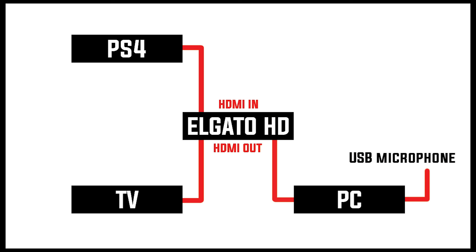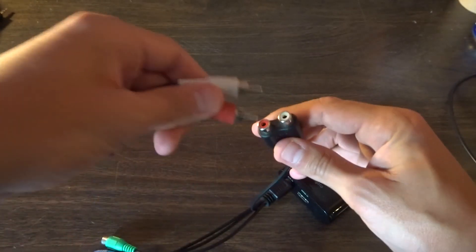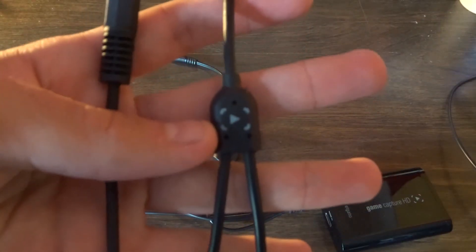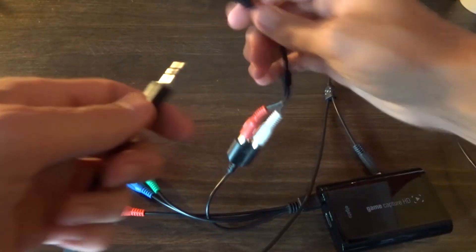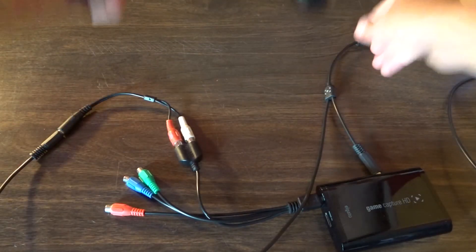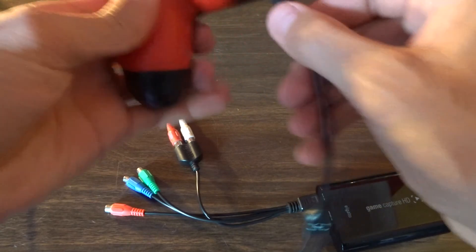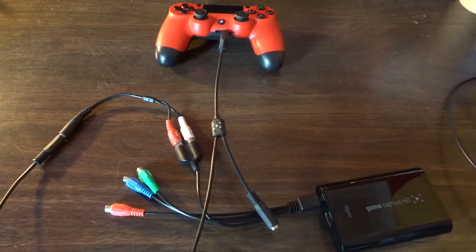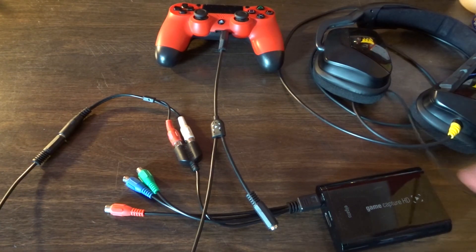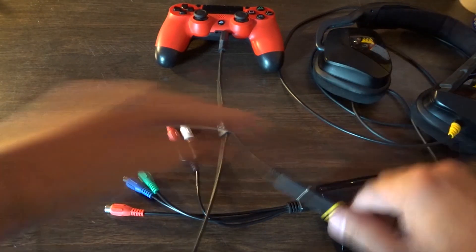The next part might get a little complicated, so that's why I am going to show you a video recording of me connecting all of the pieces together. Now because we are using the Elgato HD, we have to use the component breakout cable. We plug this cable into the AV in port that's located on the HDMI inside of the Elgato HD. Next we connect our RCA cable to the component breakout cable — red goes into red and white goes into white. Then we take our Elgato Chat Link cable and use the bottom male port to plug it into the female port of the RCA cable. Next we take the top male port of the Elgato Chat Link cable and connect it to the controller. And last but not least, we use our headset and plug the male port into the female port of the Elgato Chat Link cable.